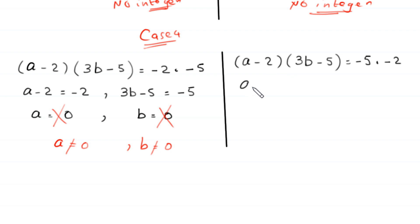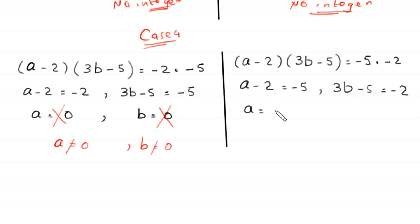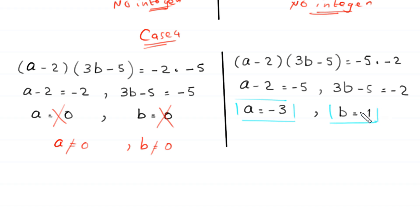In the second part of case 4, (a minus 2) equals negative 5 and (3b minus 5) equals negative 2, giving a equals negative 3 and b equals negative 1. Therefore, a plus b equals negative 2. This is the third solution.